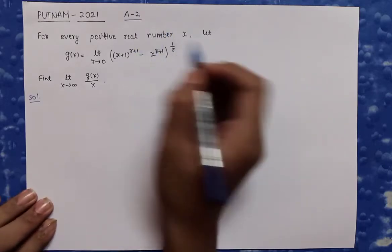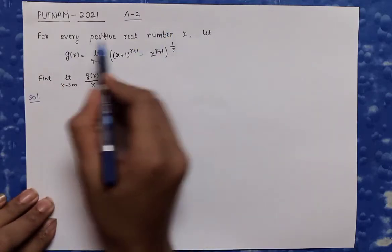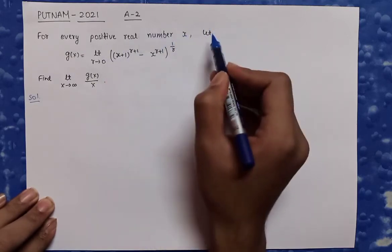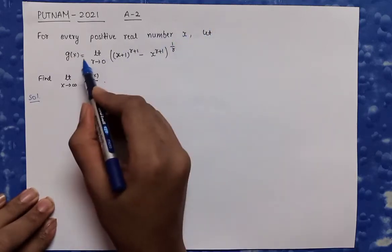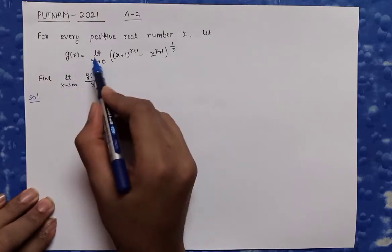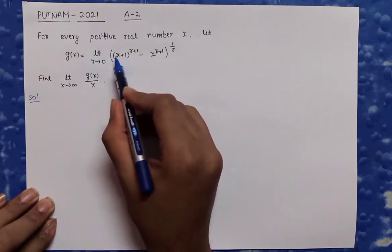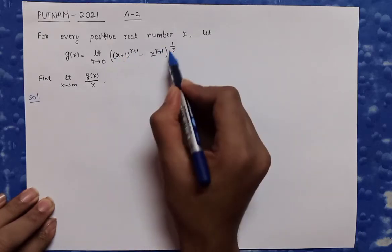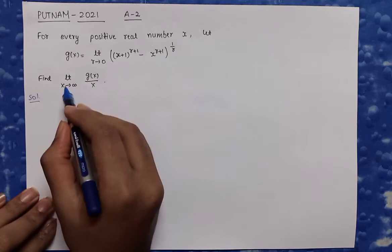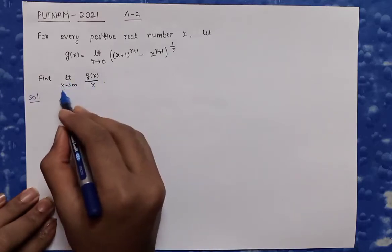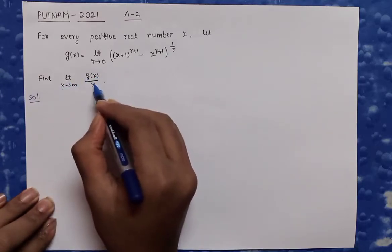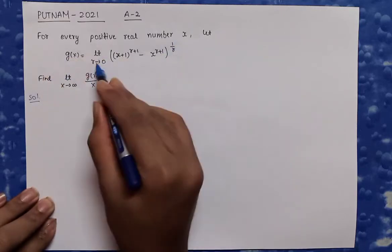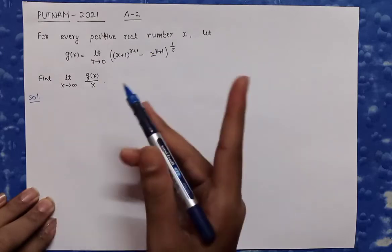Today we are going to solve this problem. The problem states that for every positive real number x, a function g(x) is defined such that g(x) equals the limit as r tends to 0 of [(x+1)^(r+1) - x^(r+1)]^(1/r). We have to find the limit as x tends to infinity of g(x)/x. Since the function itself contains one more limit, we have to solve two limits in one question.